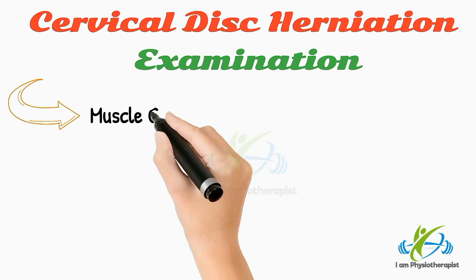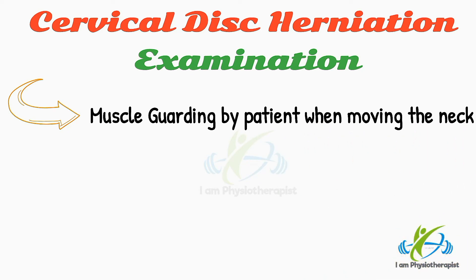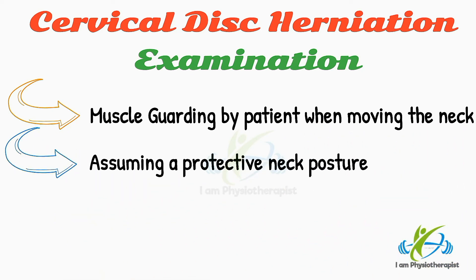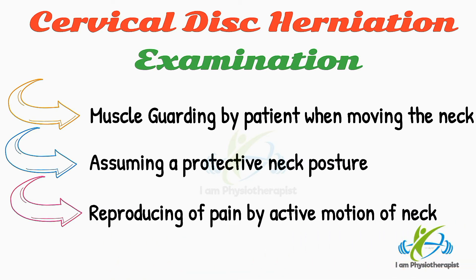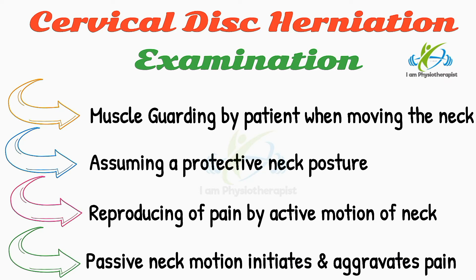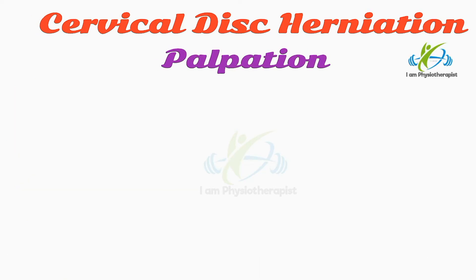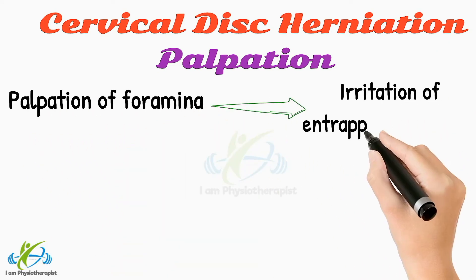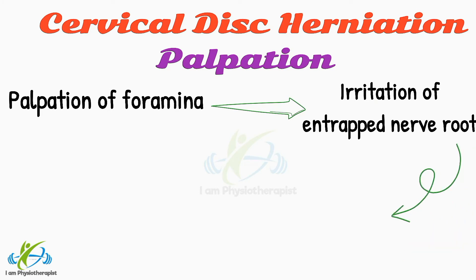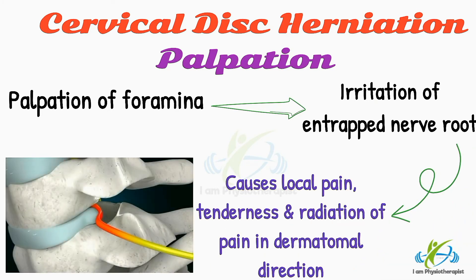Examination: muscle guarding by the patient when moving the neck, assuming a protective neck posture — for example, holding the head and neck to one side or avoiding extension. Reproducing of pain by active motion and compression of the neck. Passive neck motion initiates and aggravates pain. With digital palpation of the foramina on either side of the neck, there is irritation of the entrapped nerve root, which causes local pain, tenderness, and radiation of pain in the dermatomal direction.